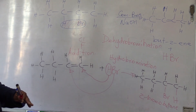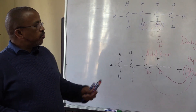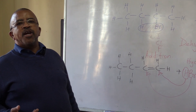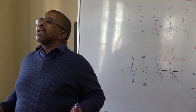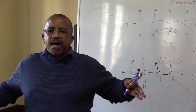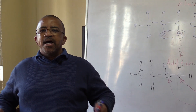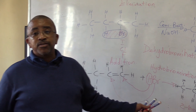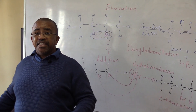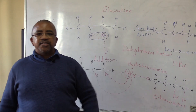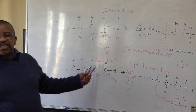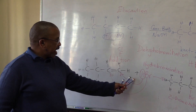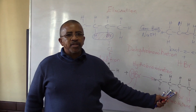Now, I should clarify — this is the addition reaction. In the addition reaction, the reactants are more than the products. Look — the reactants are two. We see only one product. So in addition, we have reactants being more than products.